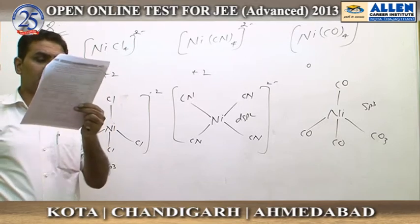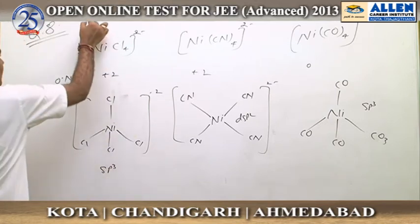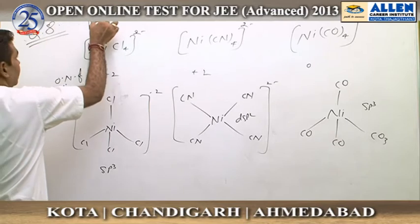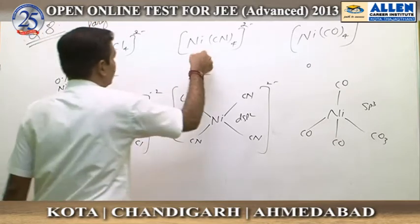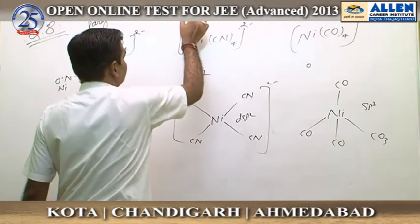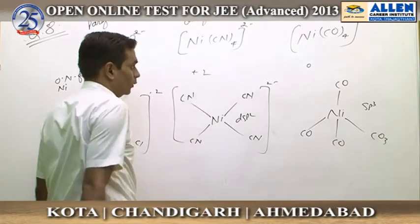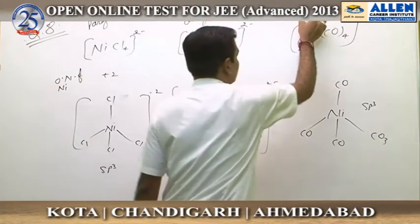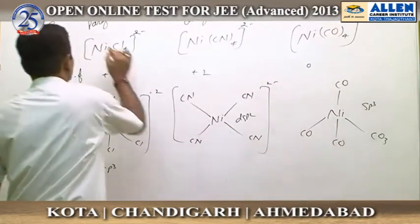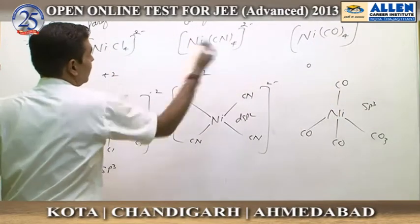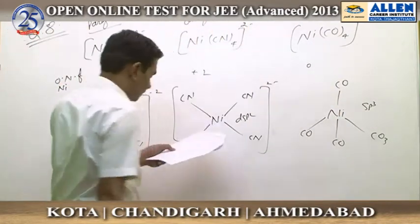Option C — magnetic nature: complex 1 is paramagnetic because it contains 2 unpaired electrons; complex 2 is diamagnetic because it contains 0 unpaired electrons; complex 3 is also diamagnetic. So this is not a similarity — one complex is paramagnetic and the other two are diamagnetic.